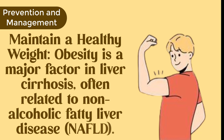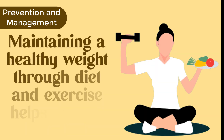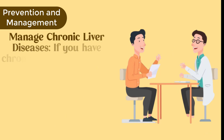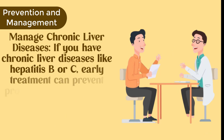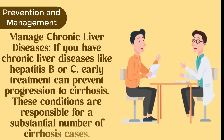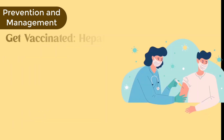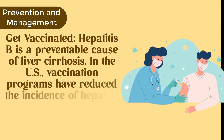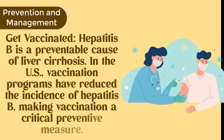Maintaining a healthy weight through diet and exercise helps prevent NAFLD-related cirrhosis. If you have chronic liver diseases like hepatitis B or C, early treatment can prevent progression to cirrhosis. Hepatitis B is also a preventable cause of cirrhosis — in the U.S., vaccination programs have reduced the incidence of hepatitis B, making vaccination a critical preventive measure.